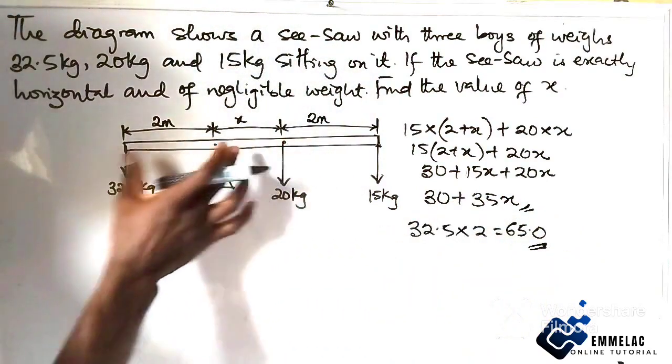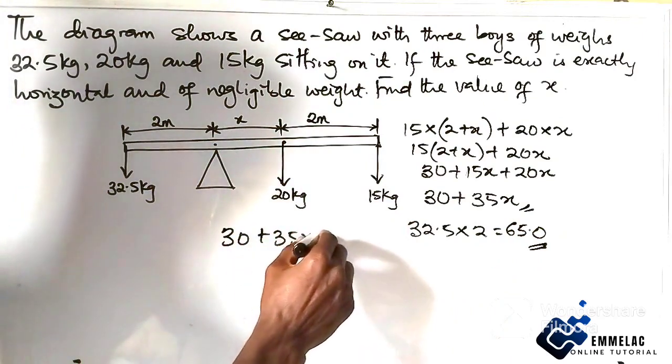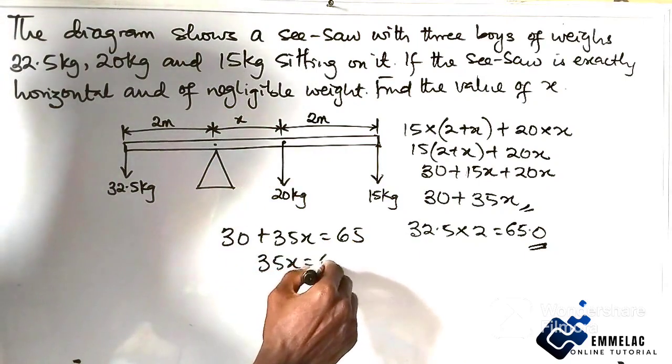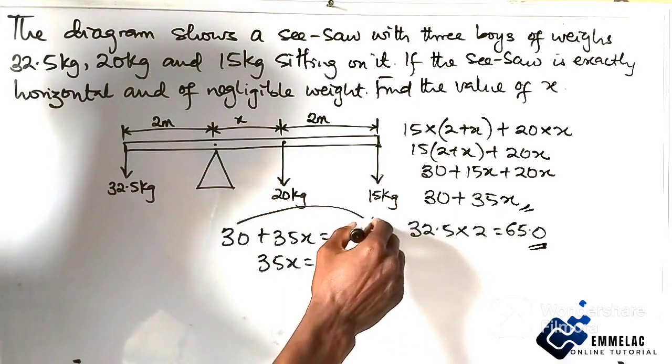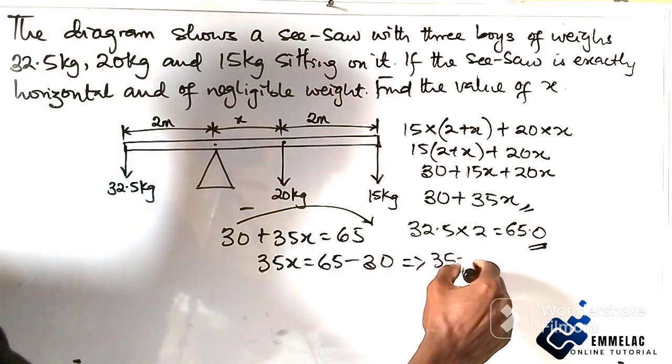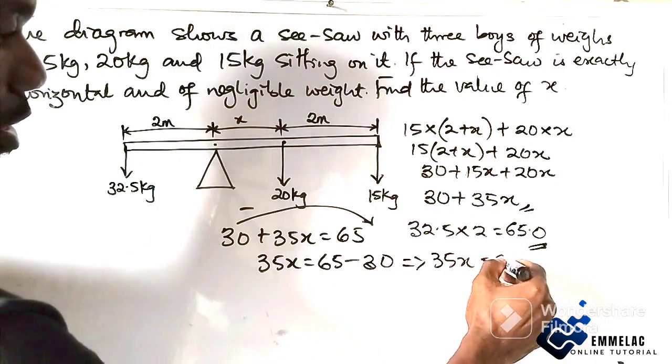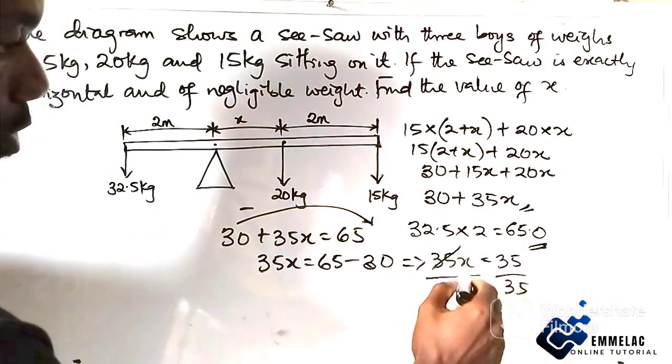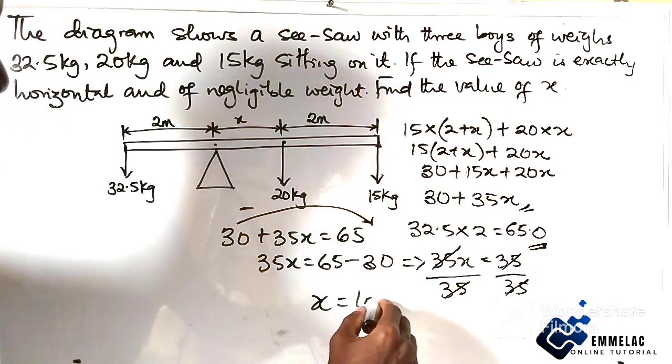So we have 30 plus 35x equals 65. Let's collect like terms. We have 35x equals 65 minus 30, which is 35. Dividing both sides by 35, we have x equals 1 meter or 1.0 meter. This is the final solution.